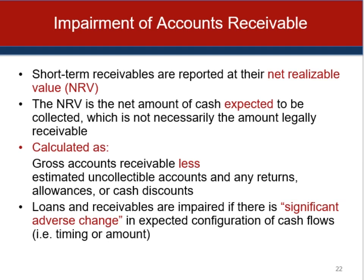The net realizable value for accounts receivable refers to adjusting it for the amount we're actually expecting to collect: gross accounts receivable less estimated uncollectible amounts, returns, allowances, and cash discounts. Loans and receivables are impaired if there's a significant adverse change in their expected cash flows — essentially not meeting the terms of payment as described in their agreement. On the financial statements, accounts receivable are described as net of the allowance for doubtful accounts on the balance sheet.